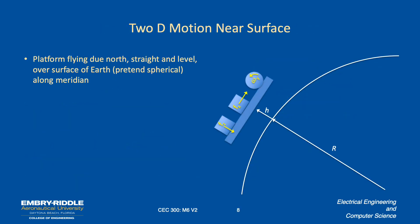What if our platform is flying due north, straight and level over the surface of the Earth? Well, as it continues on, then its orientation with respect to the inertial frame, basically, is changing.